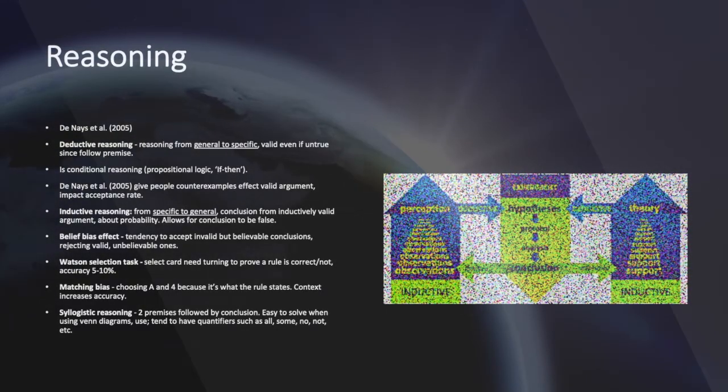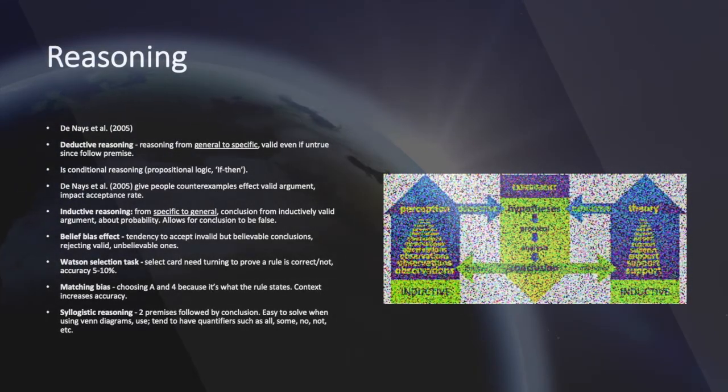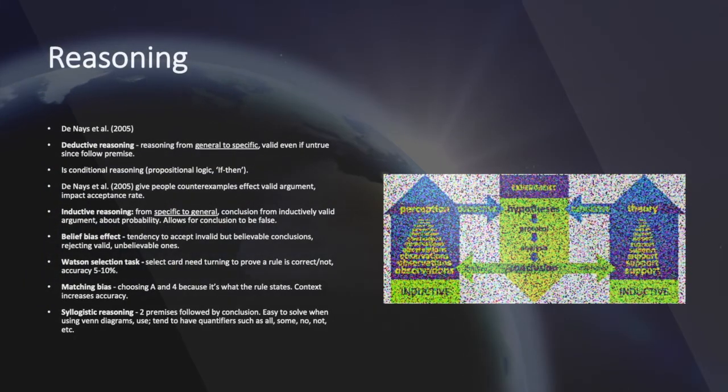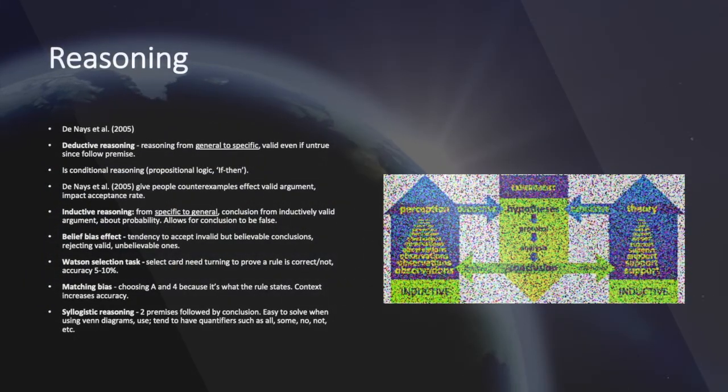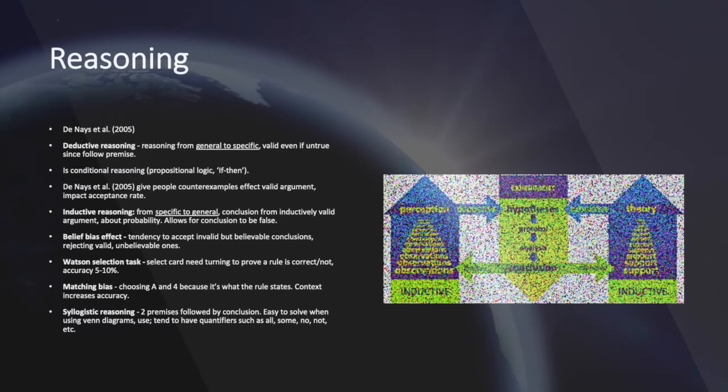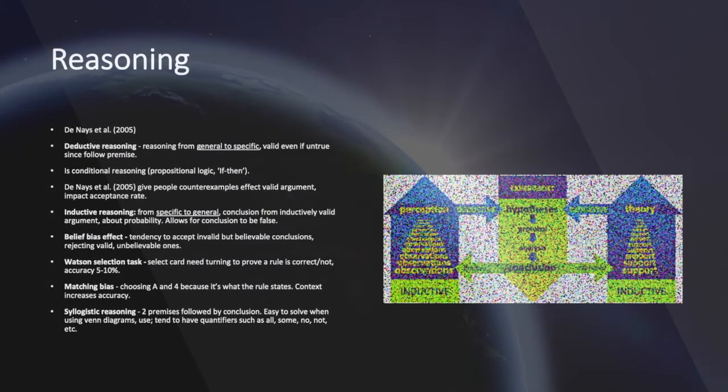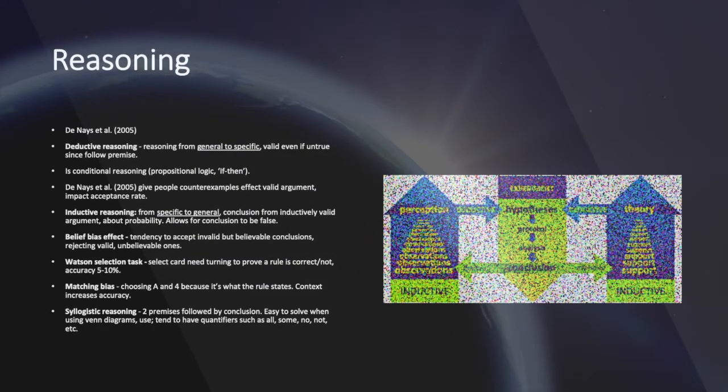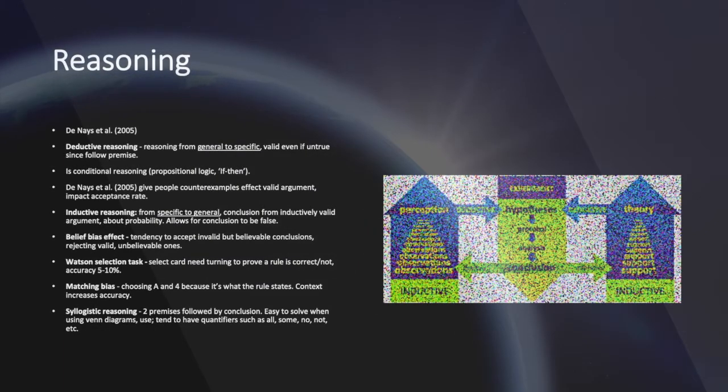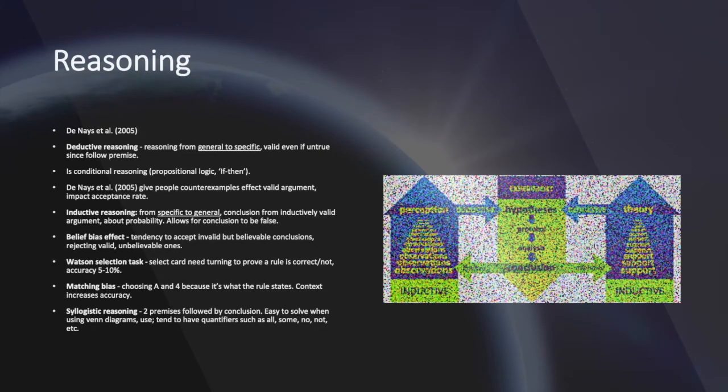Matching bias is choosing, for example, A and 4 because it's what the rule states. It was found, however, that context increases accuracy because in reality individuals do not make decisions on arbitrary letters and numbers but on other things. Thus context is key.